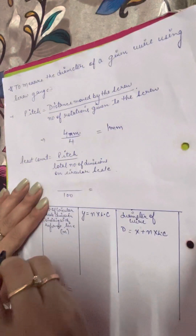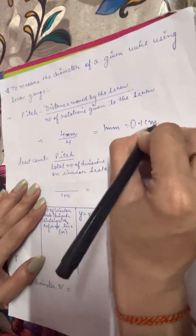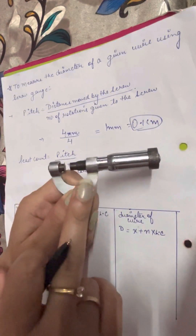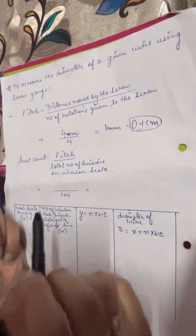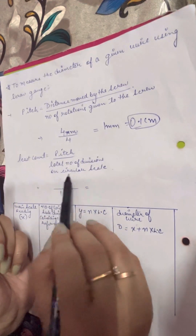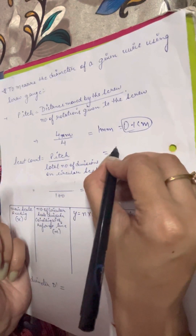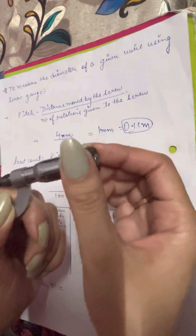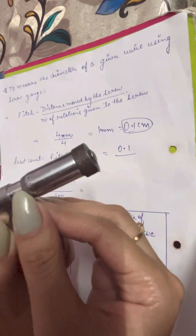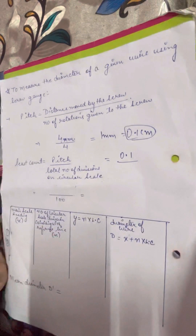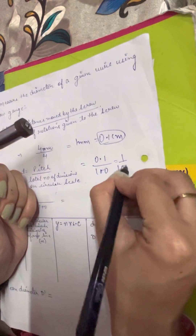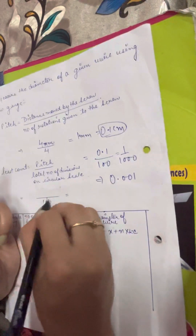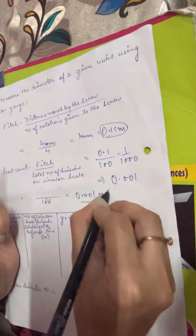So pitch equals distance moved divided by number of rotations: 4 millimeter divided by 4 equals 1 millimeter, which equals 0.1 centimeter. Now for least count — the formula is pitch divided by total number of divisions on the circular scale. The circular scale has 100 divisions, so least count equals 0.1 divided by 100, which is 0.001 centimeter.